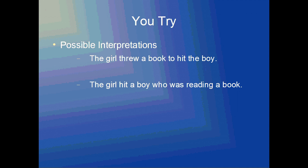Alright, so here are two possible interpretations. The first: the girl threw a book to hit the boy. Here 'with' is clarified because now we know who possesses the book — the girl had the book and threw it in order to hit the boy. The second interpretation: the girl hit a boy who was reading a book. If the boy was reading a book, it's implied that he possessed the book, so he was the one who was 'with' the book. In both cases, they are not lexically ambiguous.